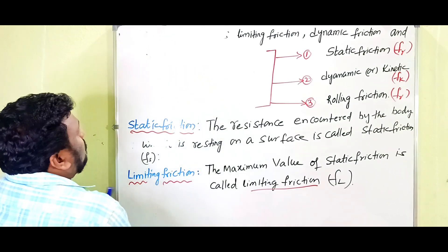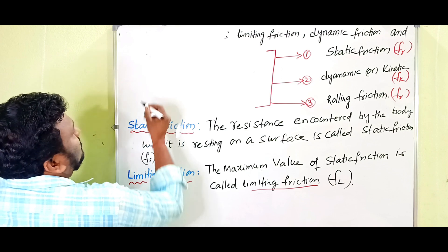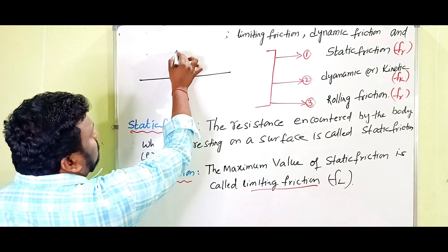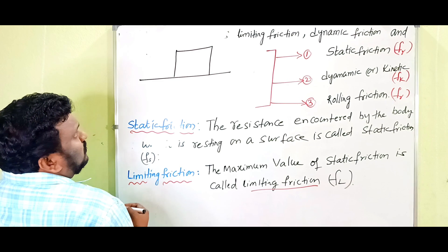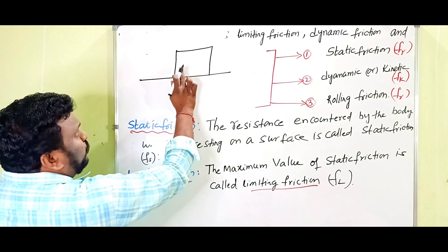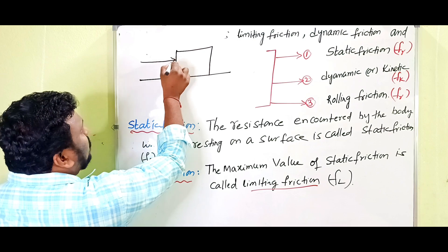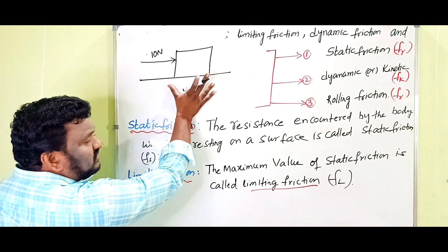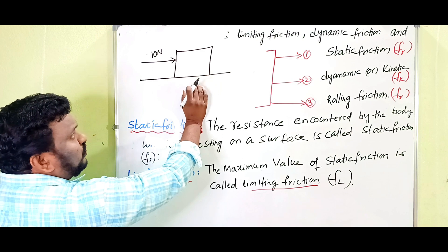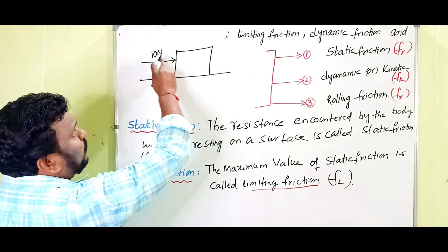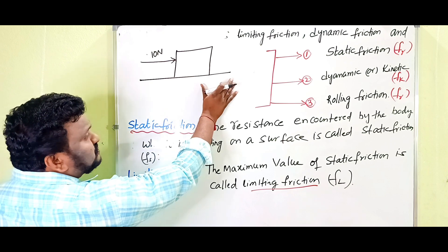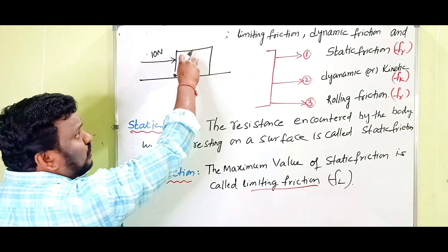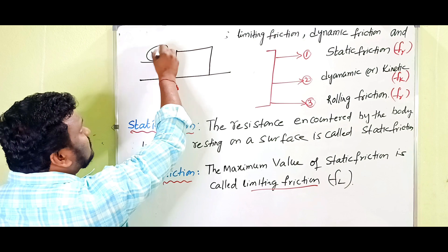Here is the horizontal surface with one block of some mass. To move the block, we have to apply a force of 10 newtons. The block is on the surface in a rest position. If you want to bring the block into motion, we have to apply a force of 10 newtons.